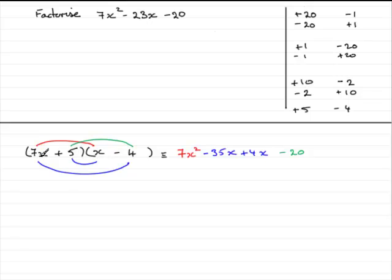But what have we got now as far as the x terms go? Well, we've got 7x times minus 4, which is now going to be minus 28x. And 5 times x, which is going to be plus 5x. So minus 28x plus 5x, minus 23x.